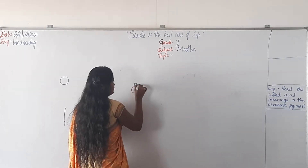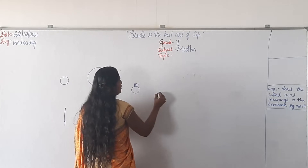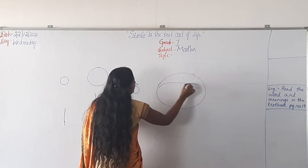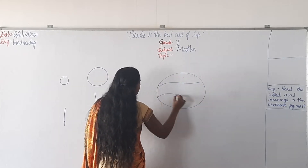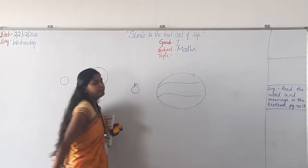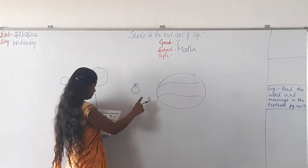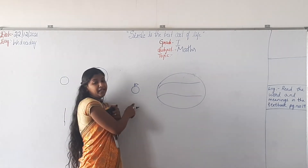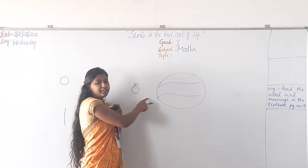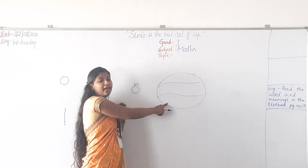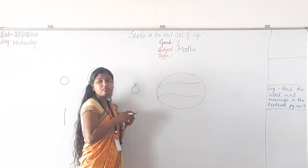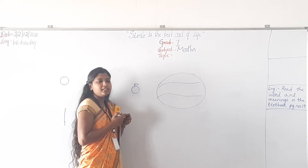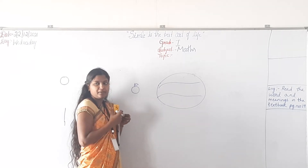Imagine this is an orange and this is the watermelon. So this will be lighter — light. This will be heavy. This is heavy weight and this is light weight.